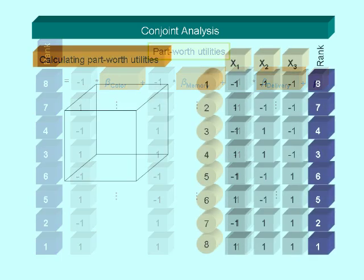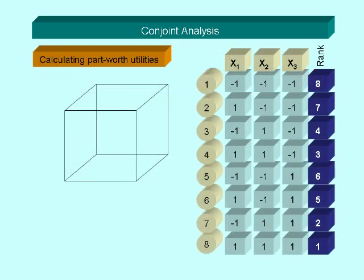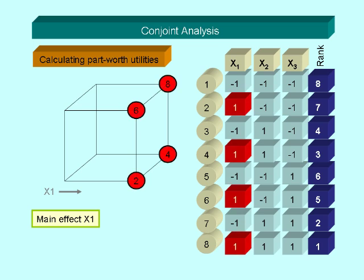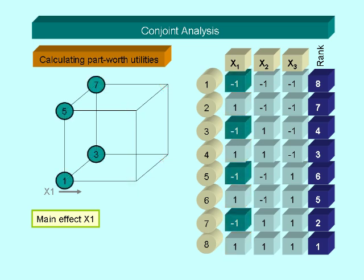For our simple example, here we calculate the part-worth utilities in the following way. To find the main effect for attribute one, color, we take the average ranking for all model combinations with x1 equals plus one, that means red color, and subtract the average ranking for all combinations with x1 equals minus one, that means green color.